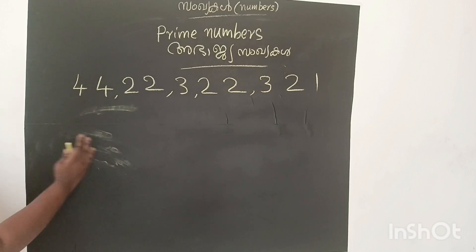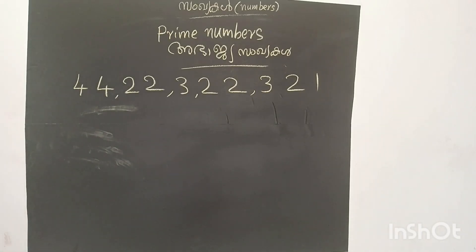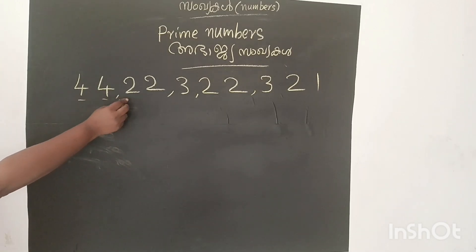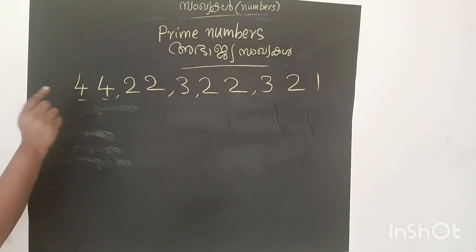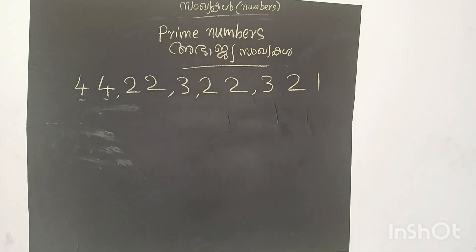One type of questions — we will talk about that type of questions. In this case, I have a few numbers here: double four, double two, three, double two, three, two, one. This is the four. One hundred prime numbers. One hundred hundred numbers. There are four, two, three, two, one. Four of them, which means ten times prime numbers — about one hundred and more prime numbers.